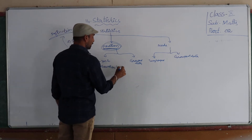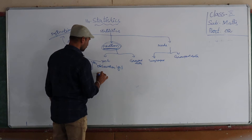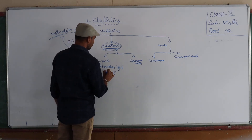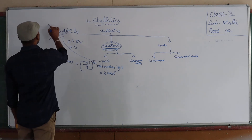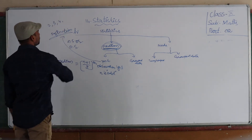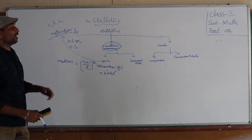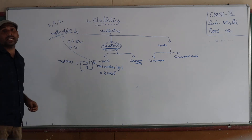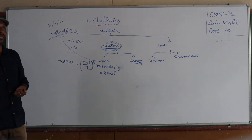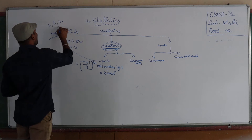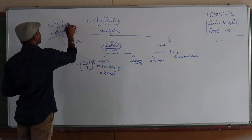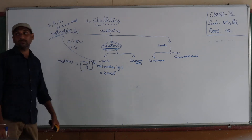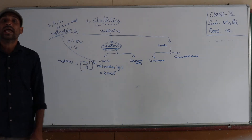If n is an odd number — for example, if they ask you to find the median of given data and there are 3 observations, then 3 is an odd number. So when the number of observations is odd, we use the formula: median = (n+1)/2 th observation.